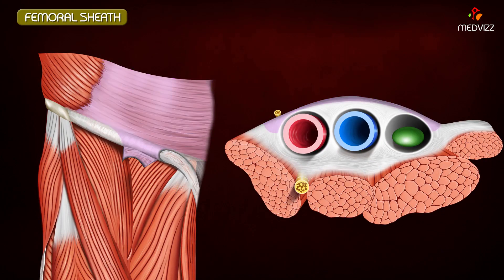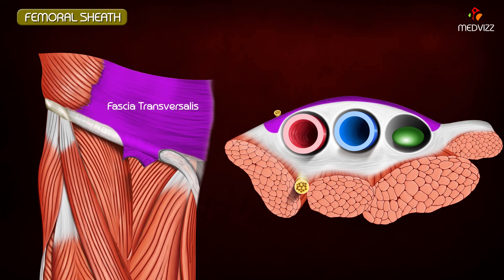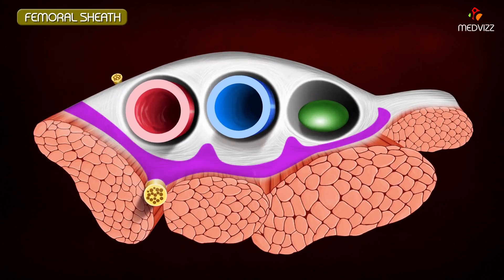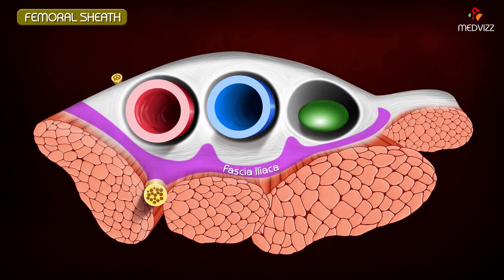The anterior wall of the sheath is formed by the fascia transversalis, which lies in the anterior abdominal wall deep to the transversus abdominis muscle. The posterior wall is formed by the fascia iliaca, which covers the iliacus muscle.